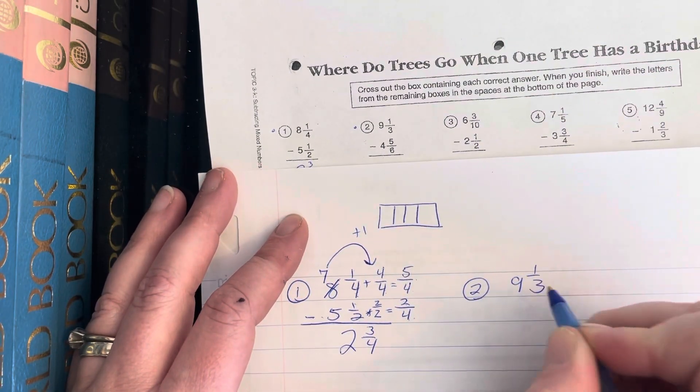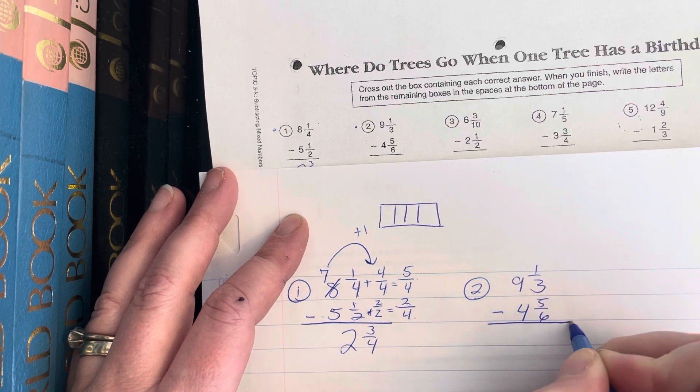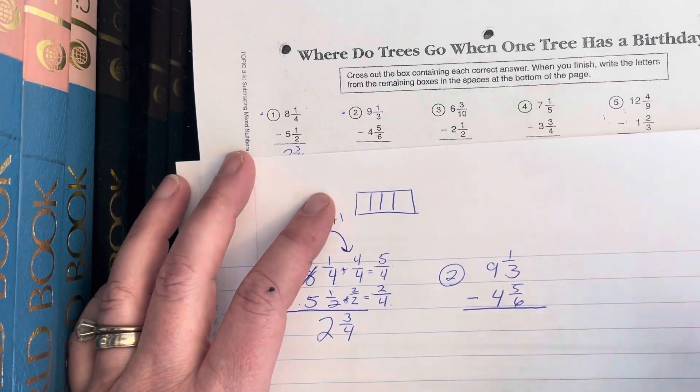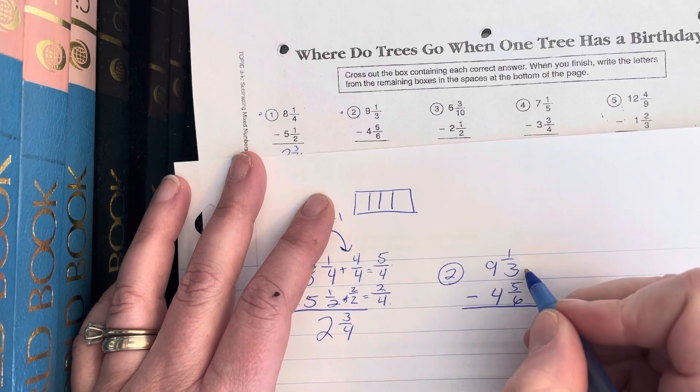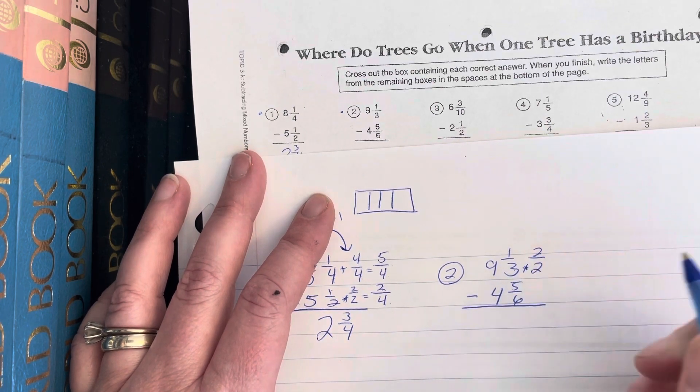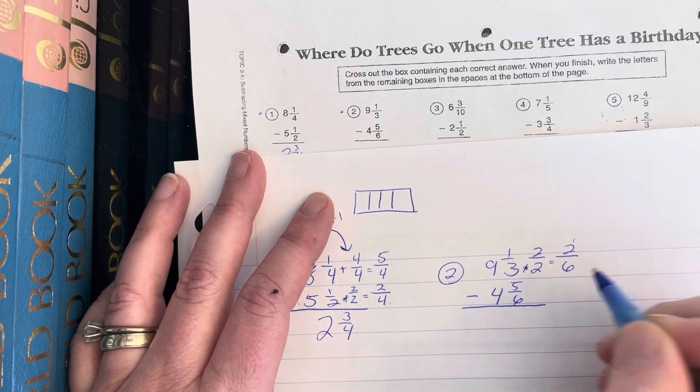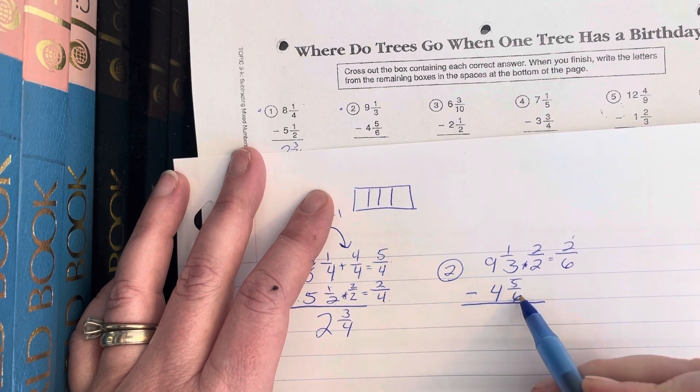I know that this answer is 2 and 3/4. Let's do number two. 9 and 1/3 minus 4 and 5/6. So again, I have different denominators, which means different piece sizes. I noticed that 3 and 6 are related - I know that 3 times 2 is 6. So I'm only going to change this top fraction by multiplying by 2/2, giving me 2/6. So 1/3 is equivalent to 2/6.